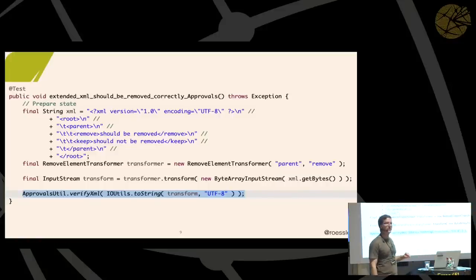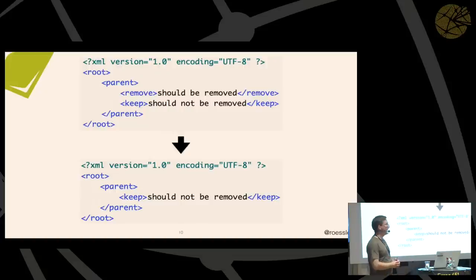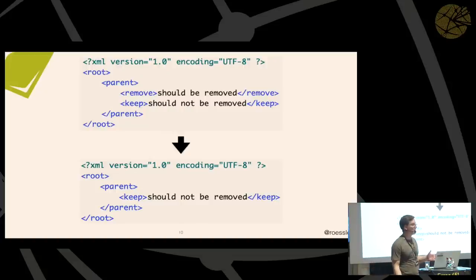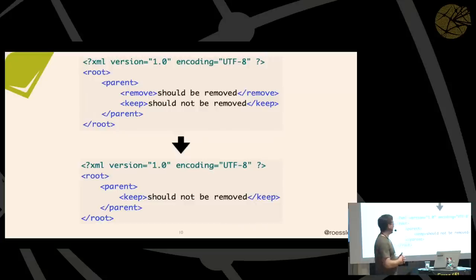The first time you run that test it will fail, because then the golden master will be created. The second time you run it, it will pass as long as the output is exactly the same as the previous output. It will make sure that it's exactly the same — even white spaces and everything. So if you think about that, traditional assertion-based testing is like blacklisting changes.